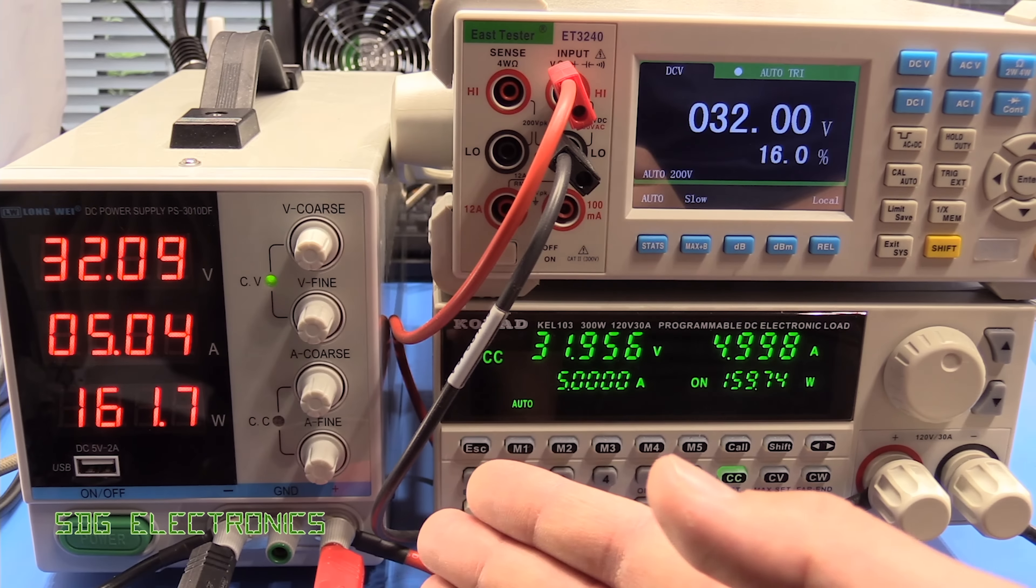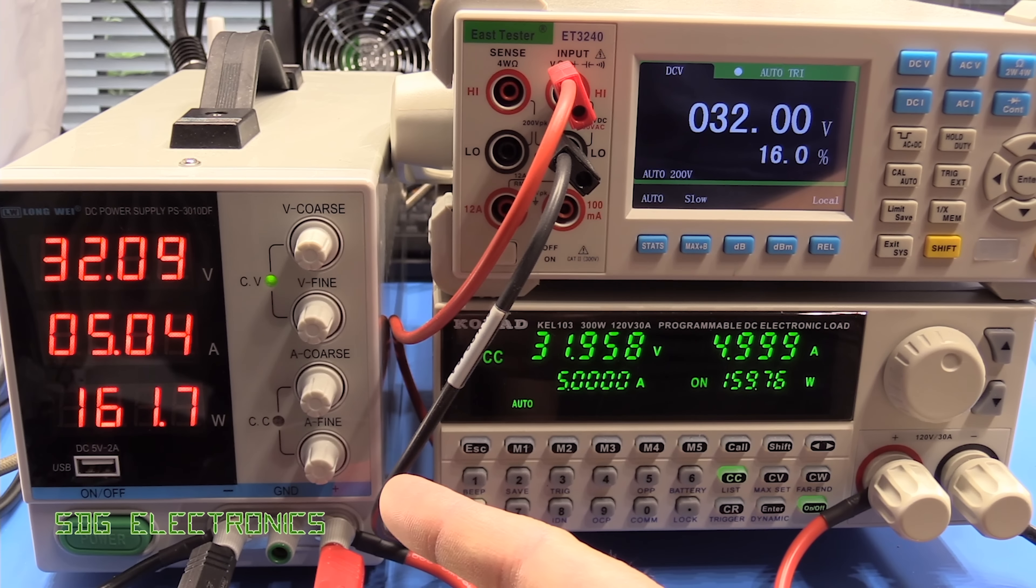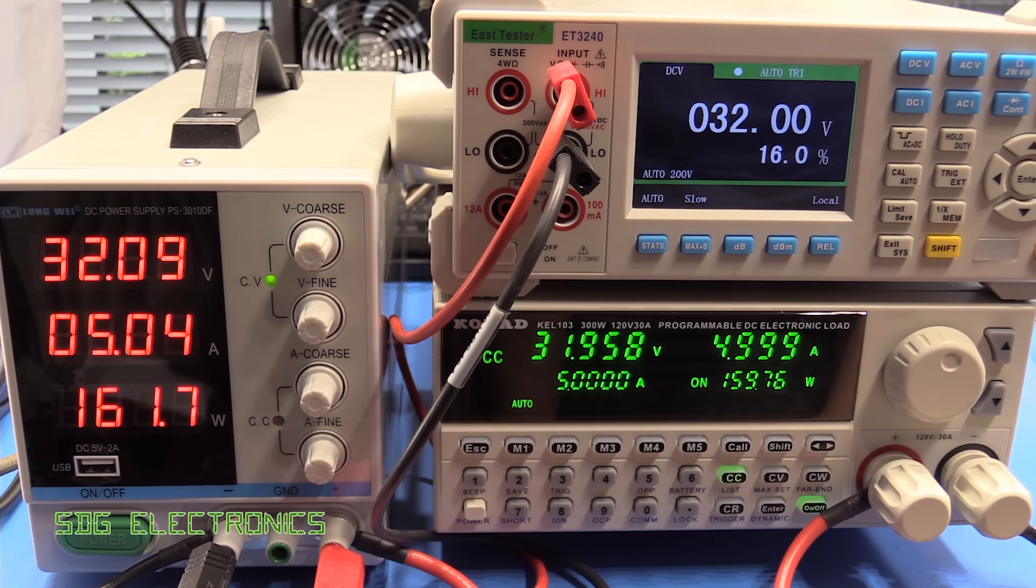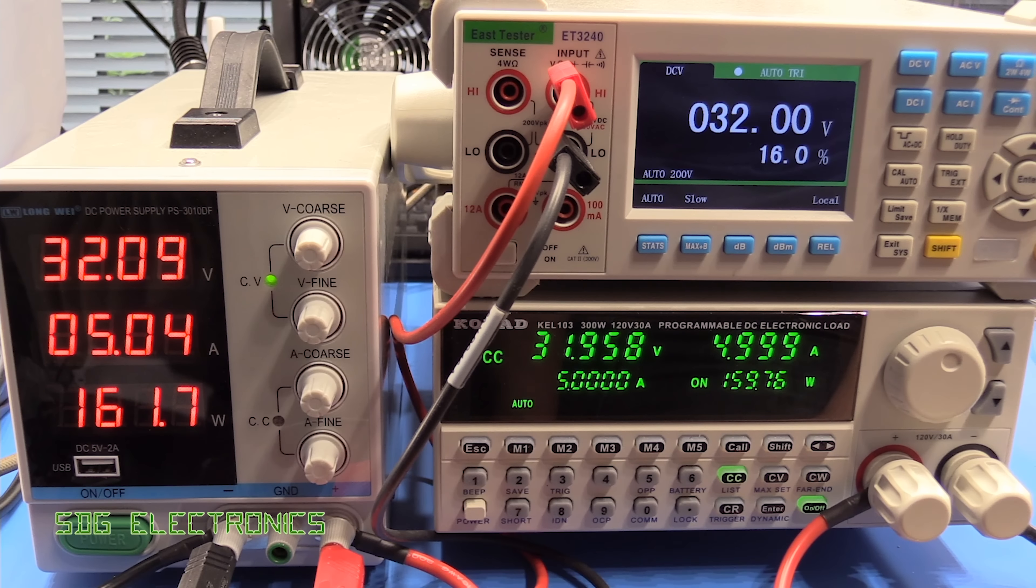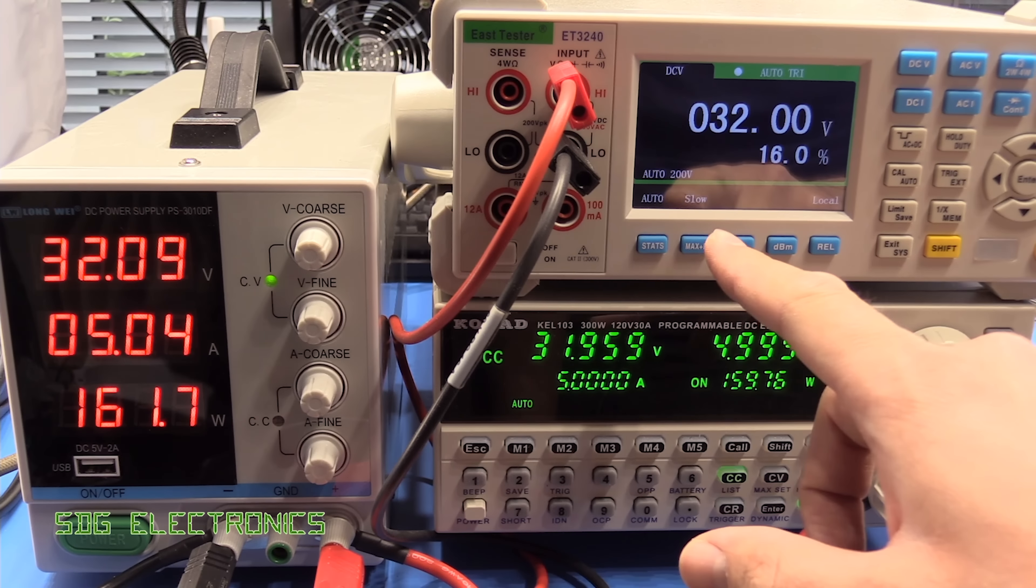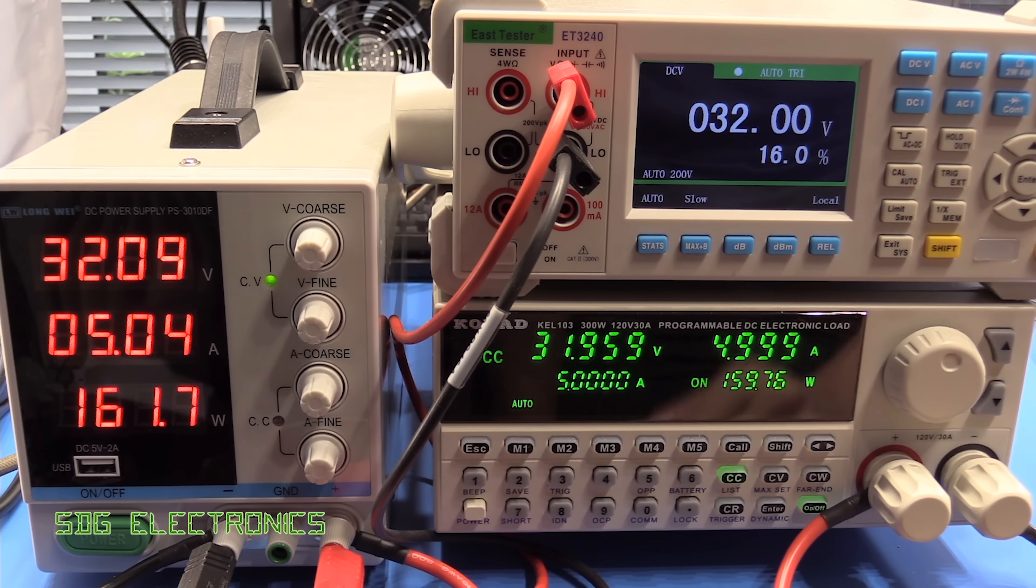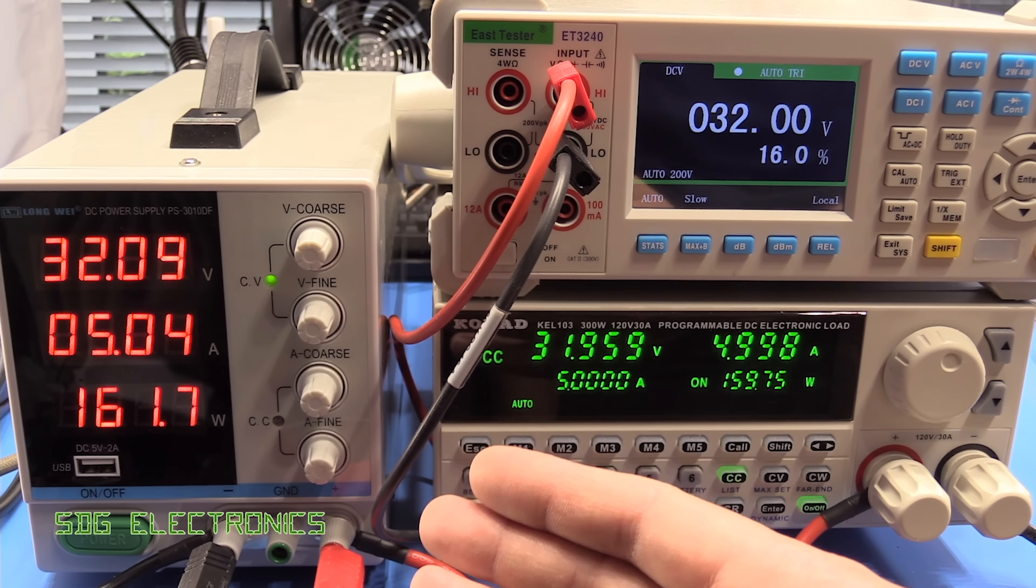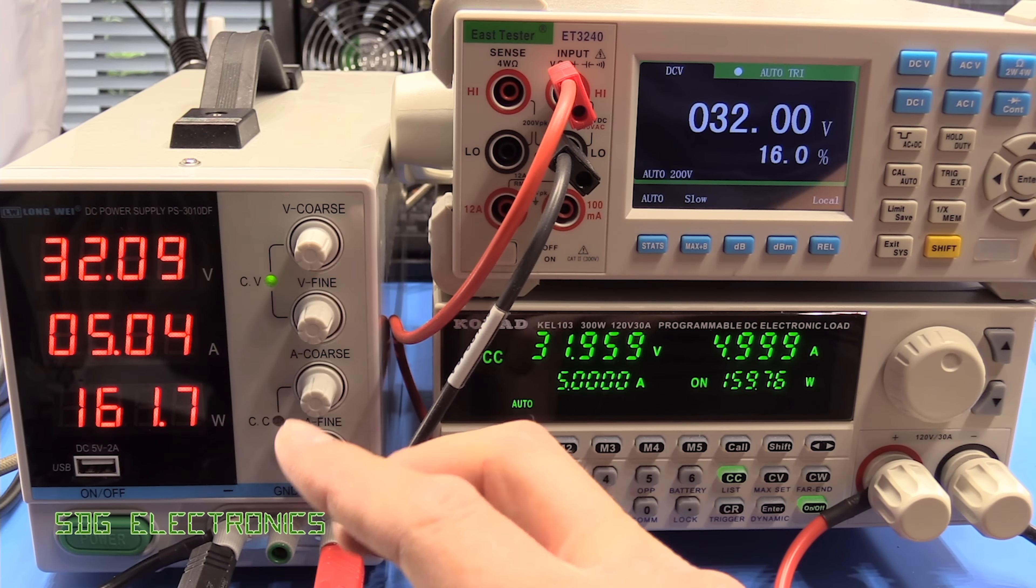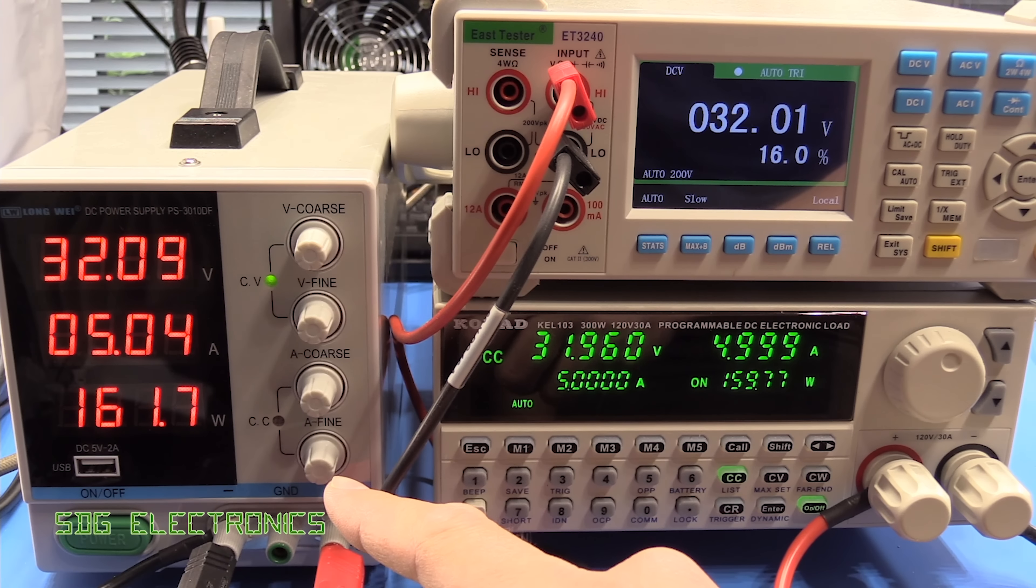So you can hear the fan possibly spinning on the power supply. It's not horrendously offensive, but it is just set on a threshold. So I hear it cycling. It probably comes on for about 20 seconds and then off for about 40 or 50 seconds. I haven't seen any indication that it's starting to struggle. The voltage output is still absolutely fine. And the fact that it's cycling suggests that at five amps or 160 watts, we're not getting close to the limit of what this is able to provide.